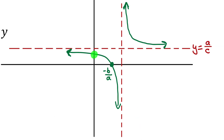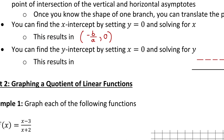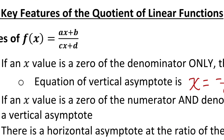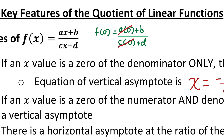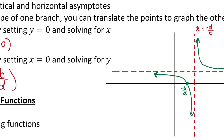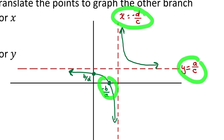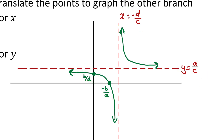To find the y-intercept, the x-coordinate of that point would be zero. So we can find the y-intercept by setting x equal to zero and solving for y. In the general equation, setting x to zero, a times zero is zero and c times zero is zero. So all we're left with for the y-intercept is the point zero, b over d. You don't have to memorize these formulas — if you understood the reasoning, you could derive them for any quotient of linear functions.